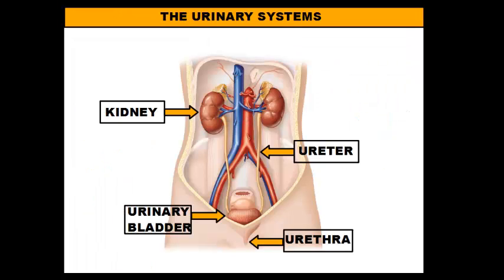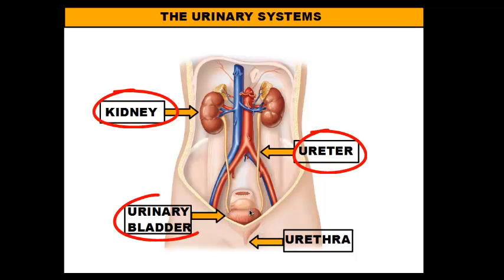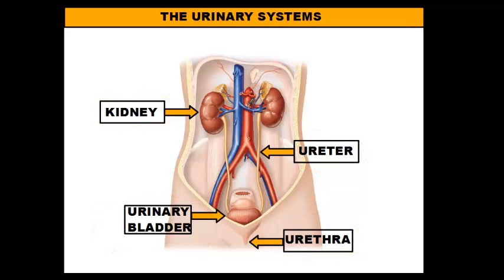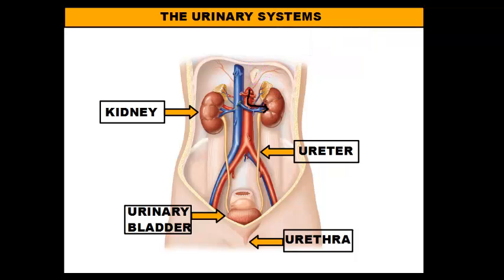Here's the urinary system in your body. It has a few structures: first, we have the kidneys; then we have long, slender tubes called the ureters; the ureters connect to a muscular bag called the urinary bladder; and lastly, we have a tube that leads from the urinary bladder outside of the body called the urethra. The kidneys are hooked up to a major artery called the aorta, which sends blood through what's called the renal artery into the kidney. Anytime you hear the word renal — R-E-N-A-L — that means kidney. So renal failure is kidney failure.